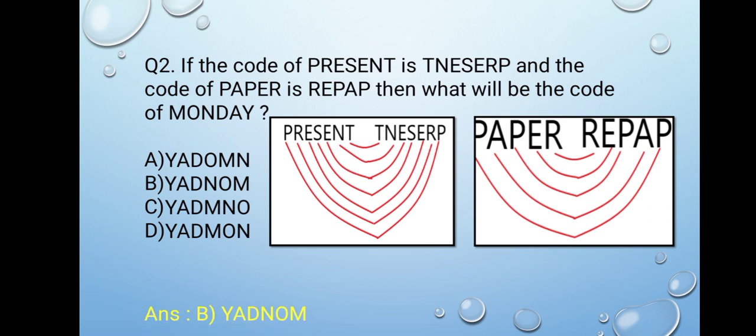I hope you all have written in your notebooks. Now match your answer with the given options. So answer will be B, Y-A-D-N-O-M. And if you read this backwards, it will form the word Monday. So this was another type of coding decoding.